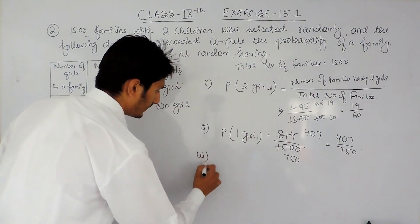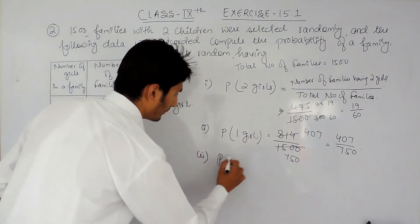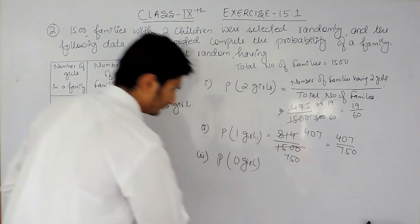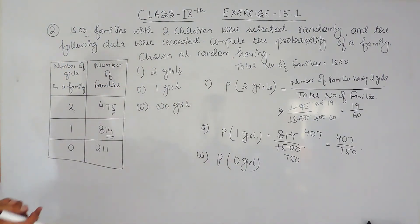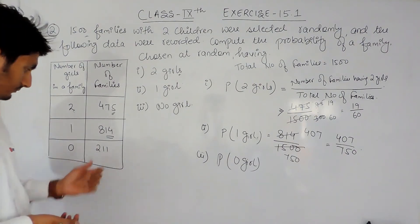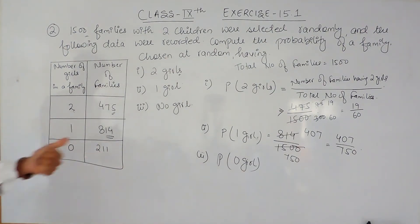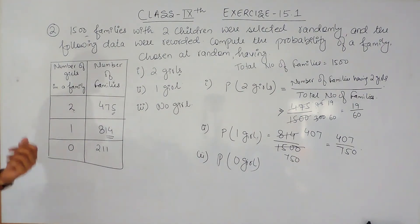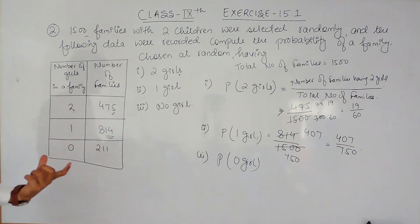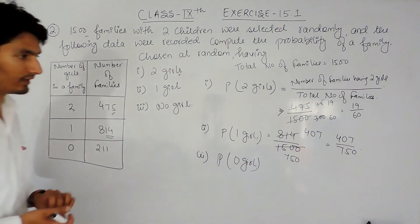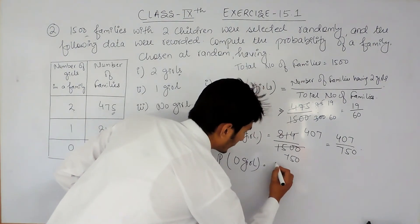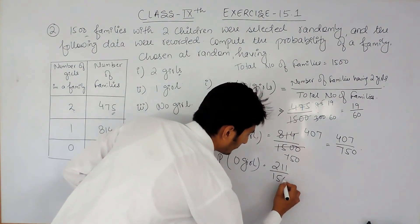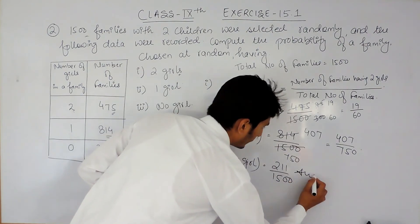Similarly, for the third part we have to find the probability of families having zero girls, or no girl. The total number of families remains 1500, and the number of families having no girl is 211. So the answer is 211 upon 1500.